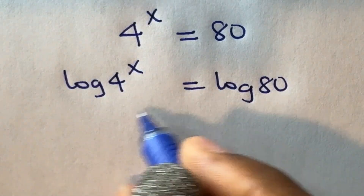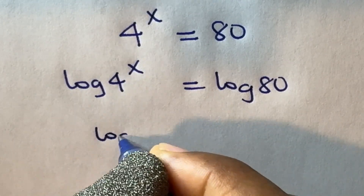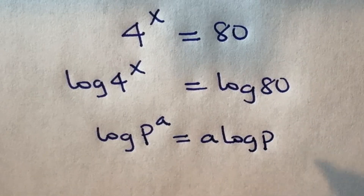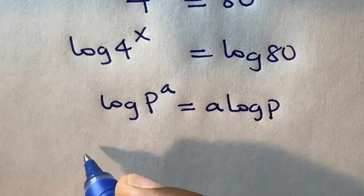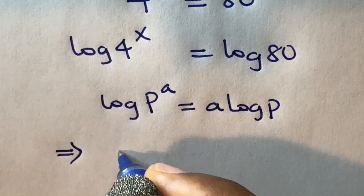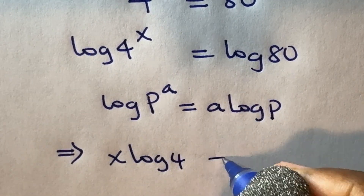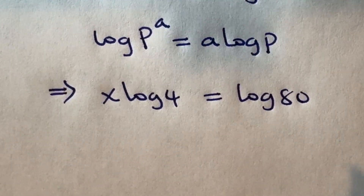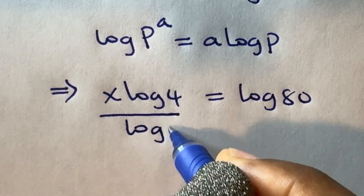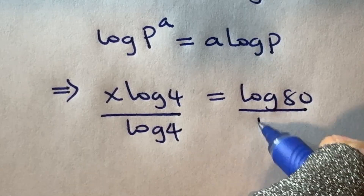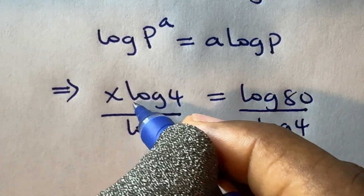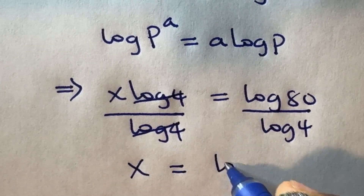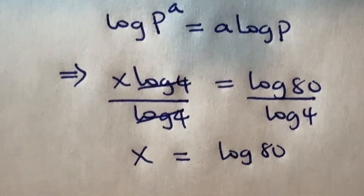Let us apply this law of logarithm: log p raised to power a will give us a·log p. Using this law, this equation becomes x·log 4 is equal to log 80. We can divide both sides by log 4, leaving us with x